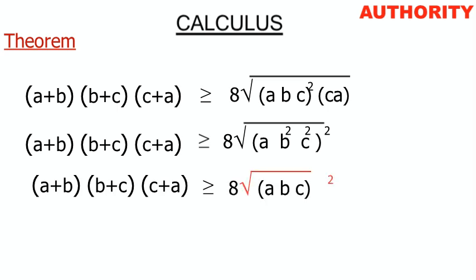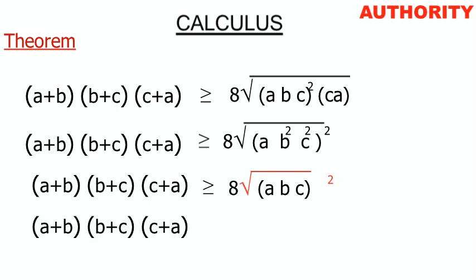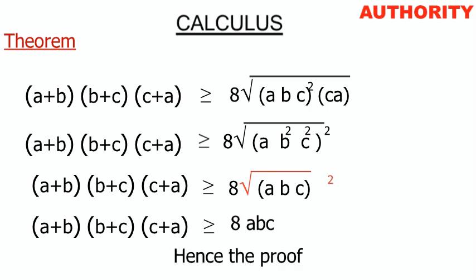Since a, b, and c are each squared under the root, we can write them together in one bracket raised to power 2: 8√((abc)²). The square root and the power of 2 cancel each other, leaving us with (a+b)(b+c)(c+a) ≥ 8abc. Hence the proof is complete.